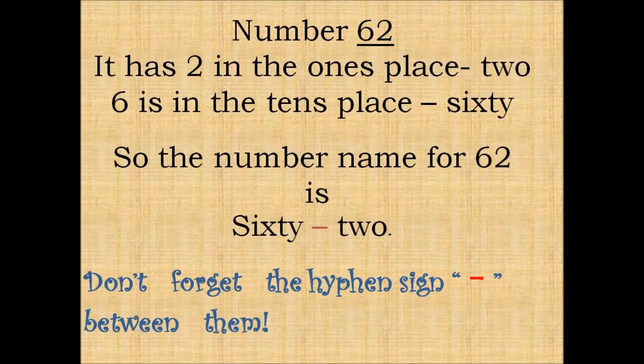Let us take the number 62. It has 2 in the ones place and 6 in the tens place. So the number name for this number is sixty-two. Don't forget the hyphen sign between them.